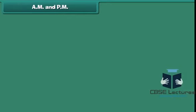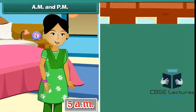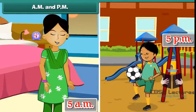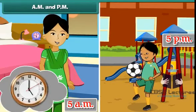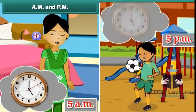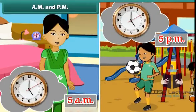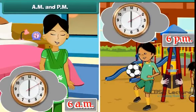AM and PM: Your mother wakes up at 5 o'clock in the morning; you go out to play at 5 o'clock in the evening. This means the clock strikes five twice in a day — once in the morning and once in the evening. This is true of every hour from 1 to 12, because there are 24 hours in a day.